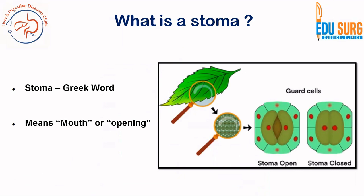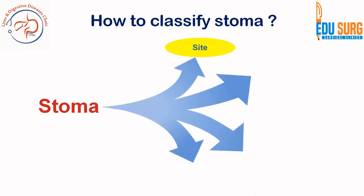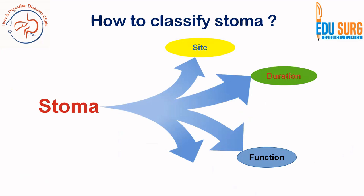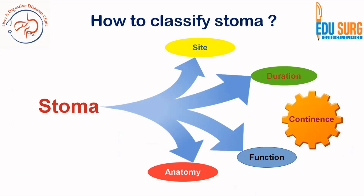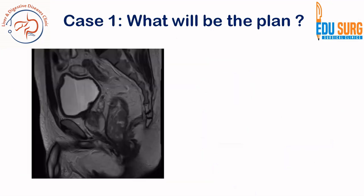So what is a stoma? It is a Greek word meaning mouth or opening. Stomas can be classified by site — ileostomy, jejunostomy, gastrostomy, colostomy — or by duration: temporary or permanent. Based on functionality it can be a diversion stoma, where you divert the stool stream, or a defunctioning stoma. Based on anatomy it can be an end stoma, a loop stoma, or a double barrel stoma. A continence mechanism can also be added. If you haven't understood this classification, we have a separate video on stoma classification.